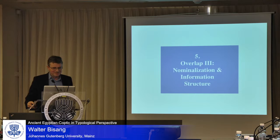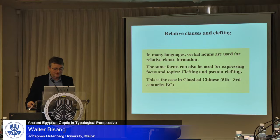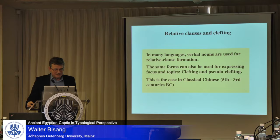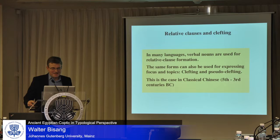That was one type of overlap. Now we will look at overlap three: nominalization and information structure. In many languages, verbal nouns are used for relative clause formation, and the same verbal forms are also used for expressing focus and topic — that is, clefting and pseudo-clefting. One nice language is classical Chinese, a written language from approximately the fifth to third century BC, at the time of Confucius and many other Chinese classics.